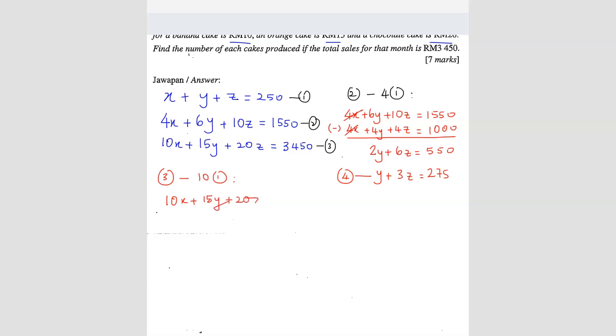So 10x plus 15y plus 20z equals 3450, and I'm going to minus 10 times the first equation: 10x plus 10y plus 10z equals 2500. Here I can eliminate the x, and then I get 5y plus 10z equals 950. This can also divide by 5, so I get y plus 2z equals 190. This is my fifth equation.